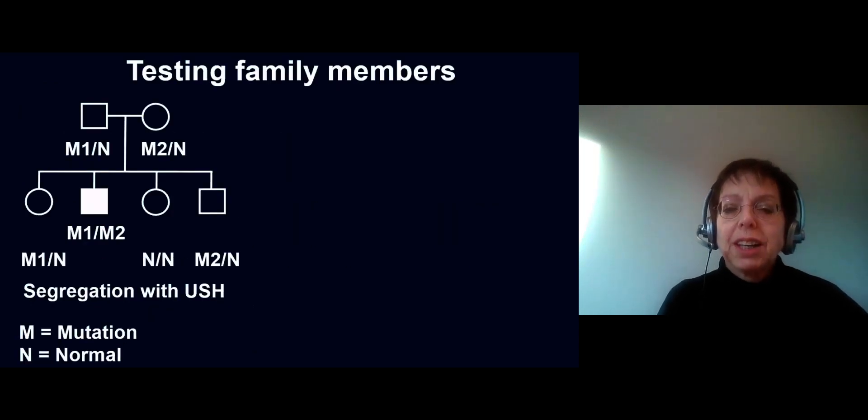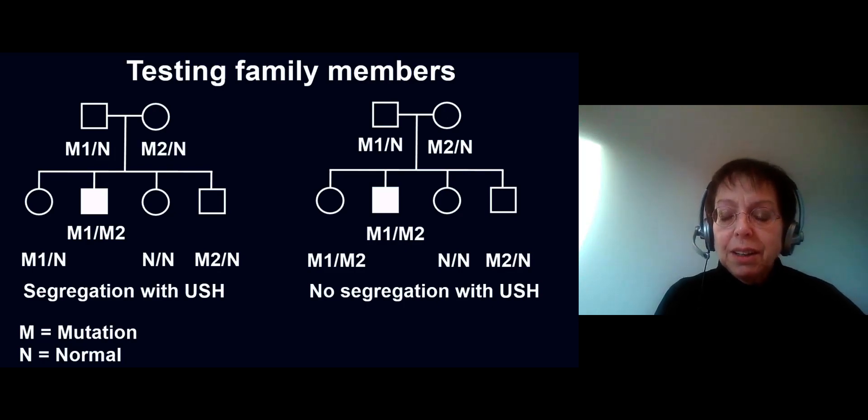Now I show you a second segregation model of the two variants. Same pedigree, but now the oldest sister has the same two changes as the boy with Usher syndrome. But she has no Usher syndrome. This indicates that the two changes cannot explain the Usher syndrome in this boy, so they can be excluded for being causative. This explains why your geneticist asks for blood samples of family members to test.